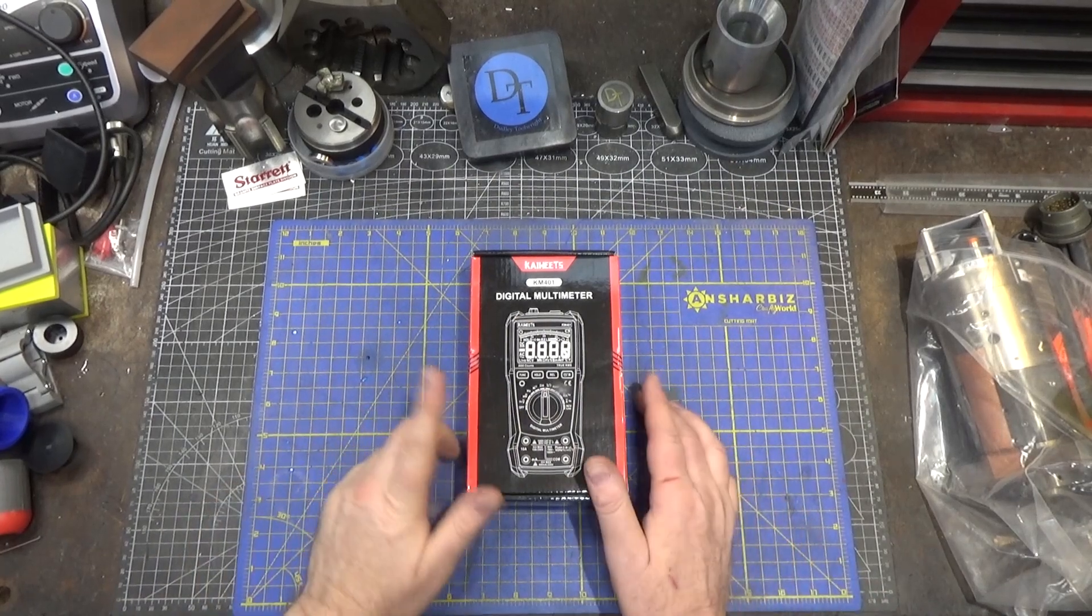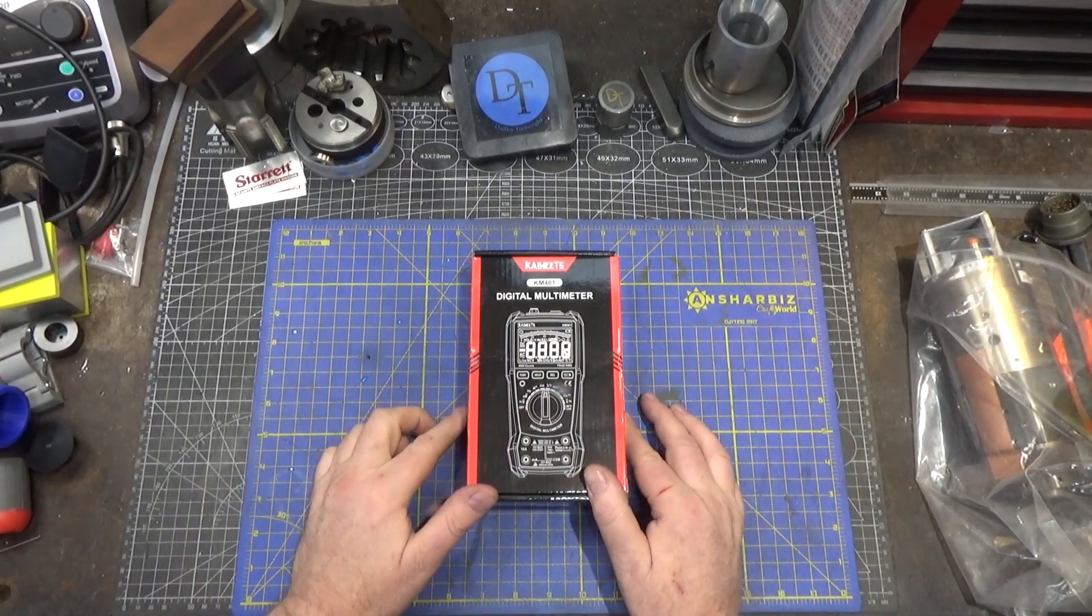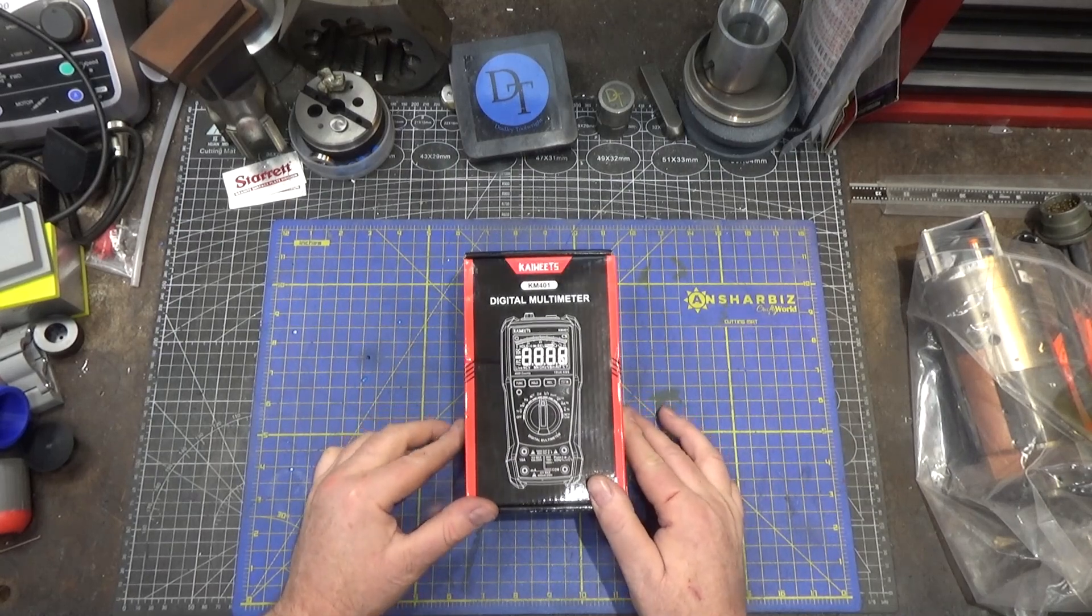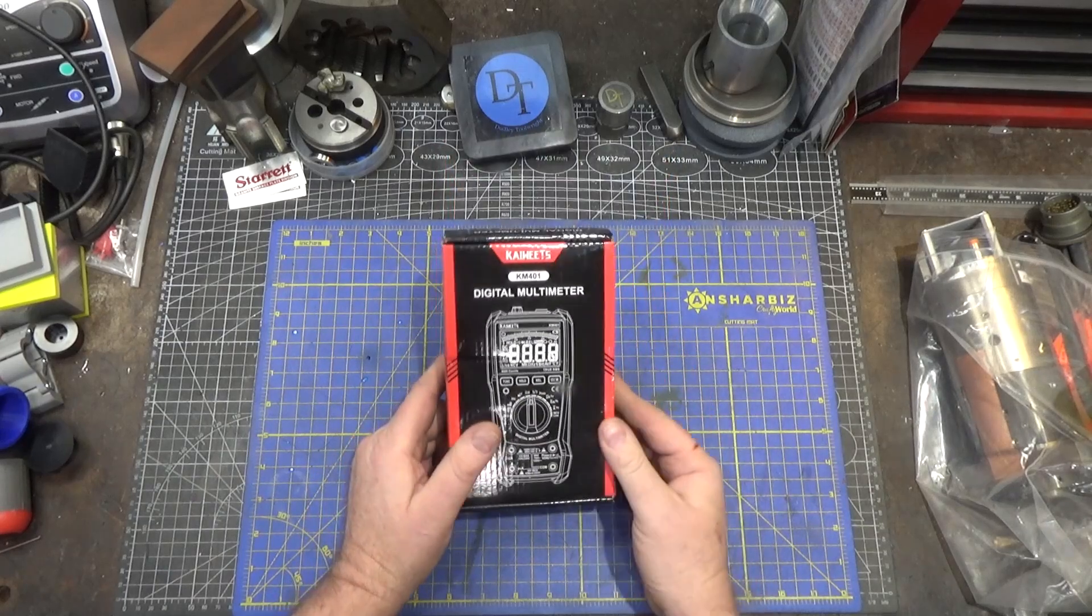Hi and welcome to this quick tool review. This time around we'll be looking at a Kaiwheats KM401 digital multimeter. Available on Amazon currently for $25.99 with a $3 coupon. It's another small inexpensive digital multimeter.